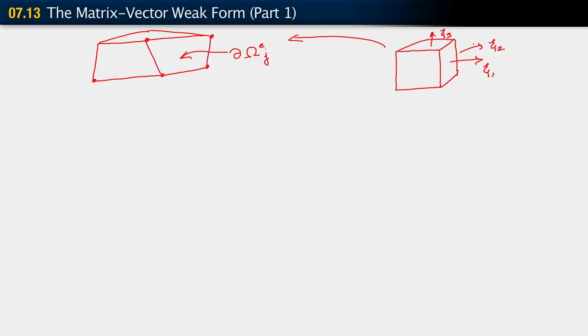On this element, let's suppose that surface of interest to us is this one. Let's suppose that this one is the surface ∂Ω_e^j. Now this element is always constructed from the same parent domain, a nice regular element in this bi-unit domain. Let's suppose just for the purpose of argument that the face ∂Ω_e^j is the mapping of that face.